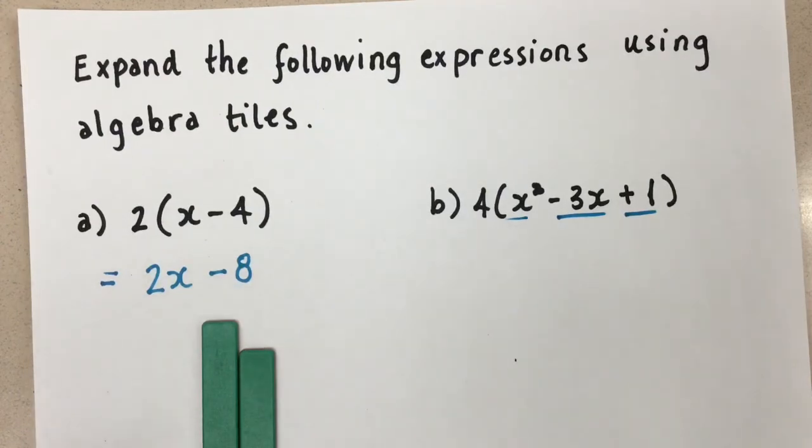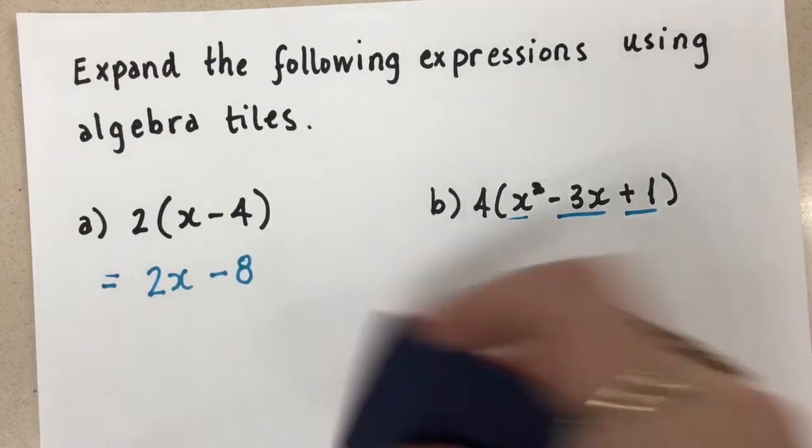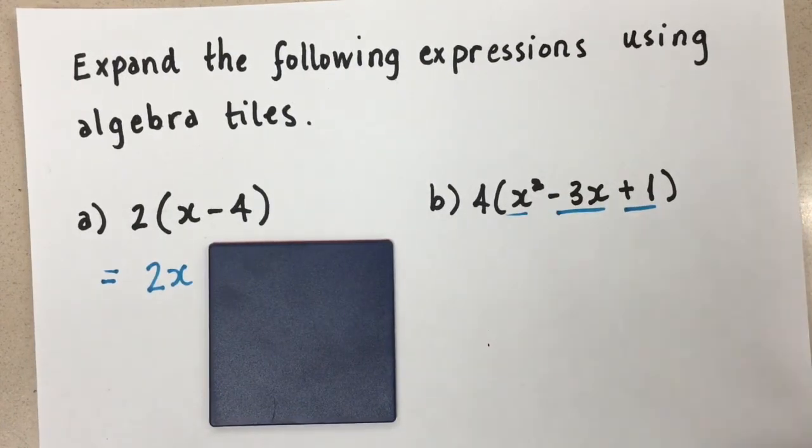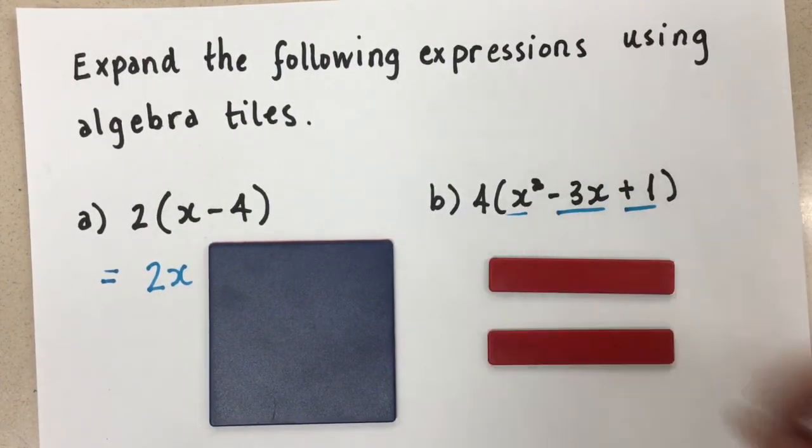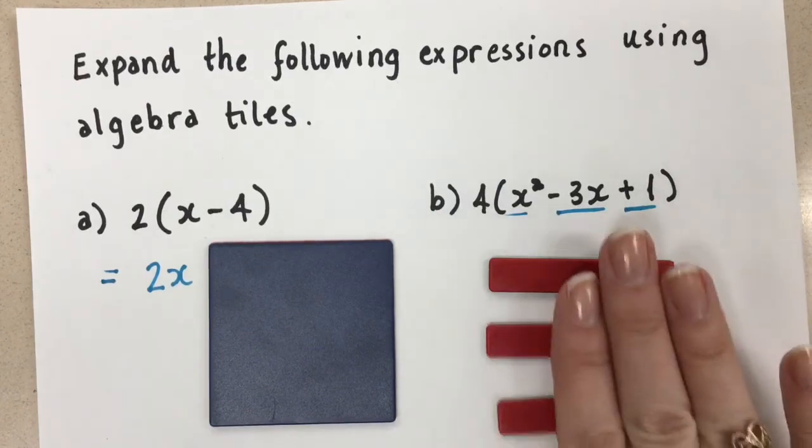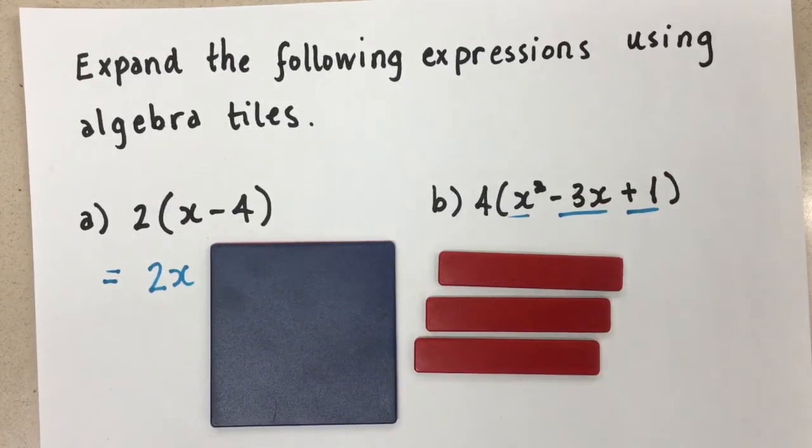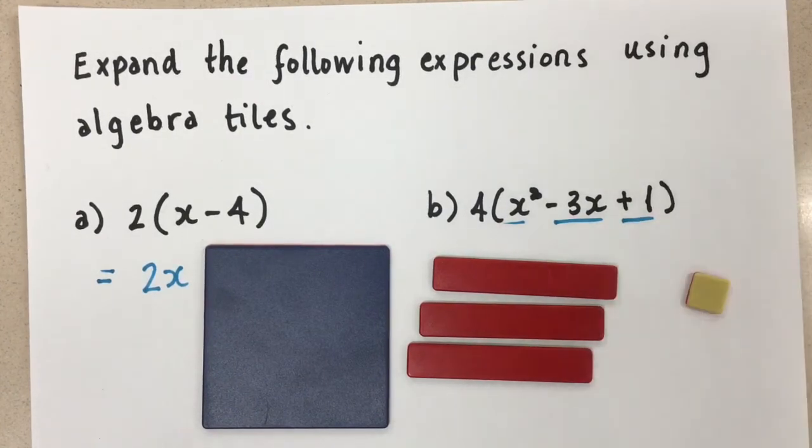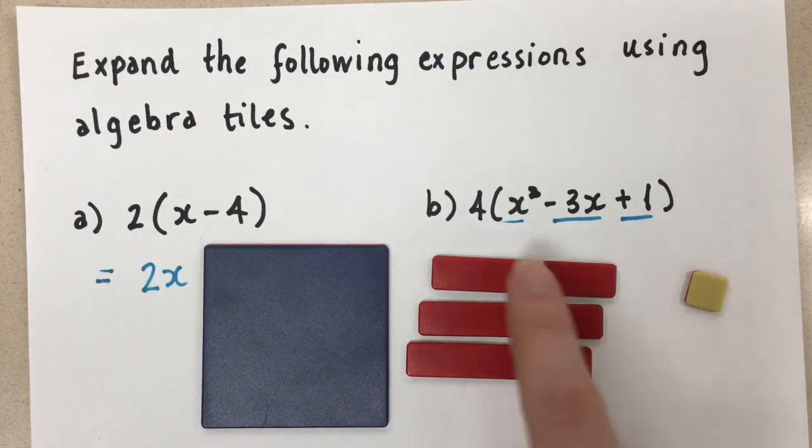So we have a positive x squared here. And we have negative 3x. So we're going to do three x's on the negative side. That's negative 3x. And then we have a positive 1. So that's one of these. So that's the whole expression inside of the brackets.